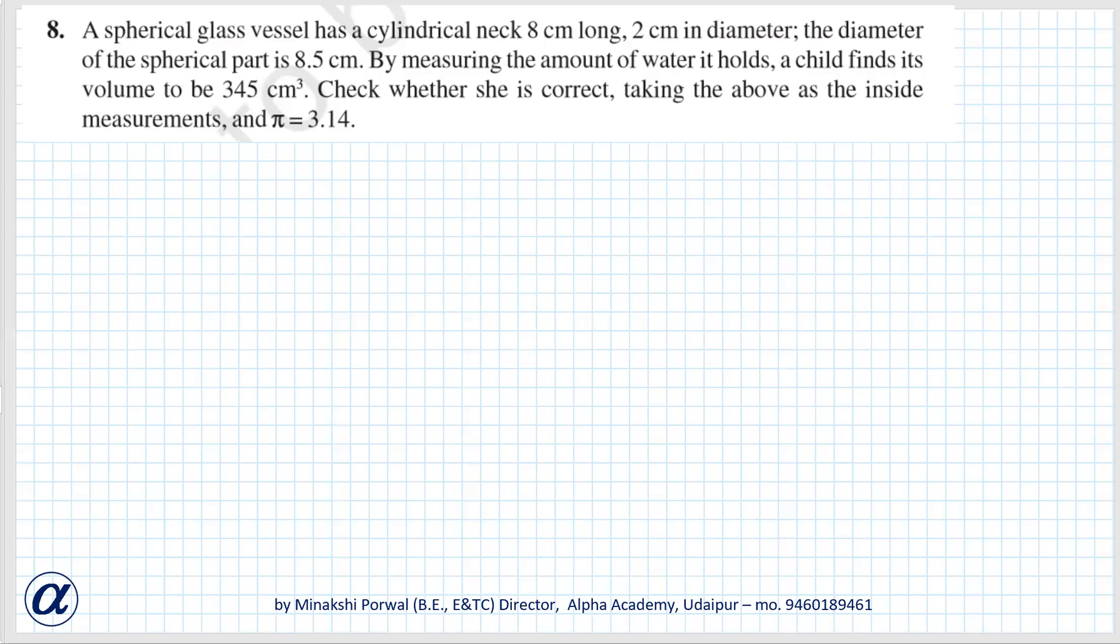A spherical glass vessel is there and has a cylindrical neck. Its neck is a cylinder. The diameter of the neck is 2 cm, this diameter is 2 cm.